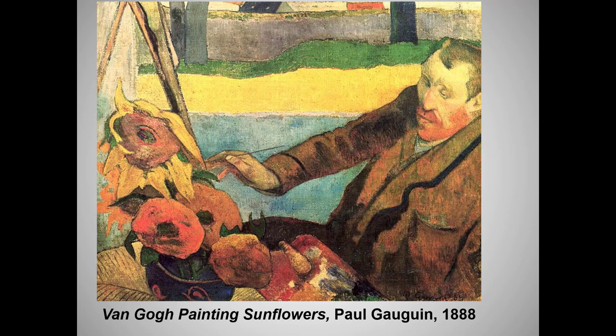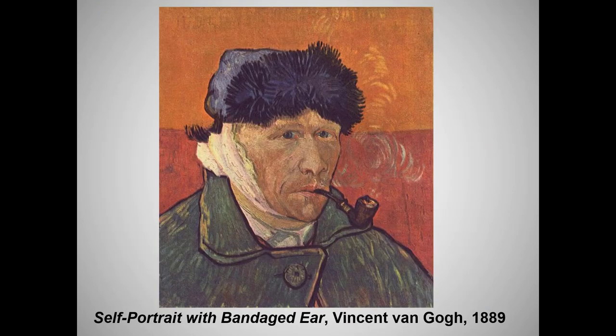Bleeding profusely, Van Gogh went first to a brothel and then was taken to a hospital. Gauguin returned to Paris, and Van Gogh never saw him again. Here is Van Gogh's painting of the aftermath of that incident.